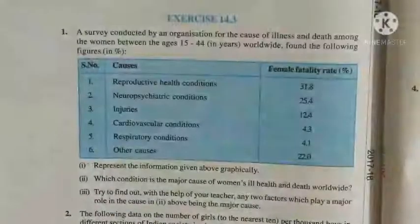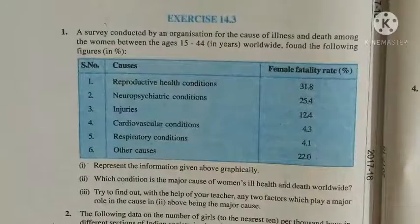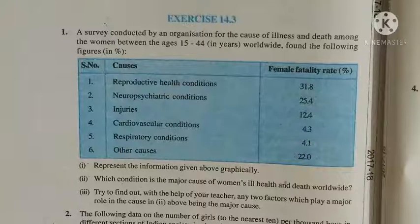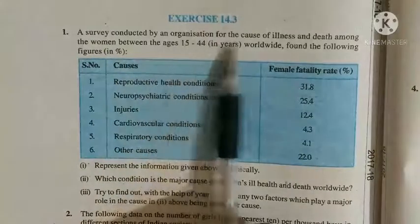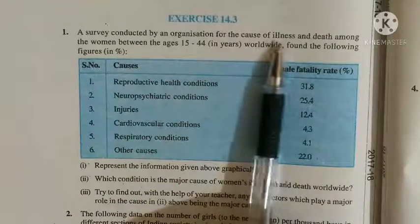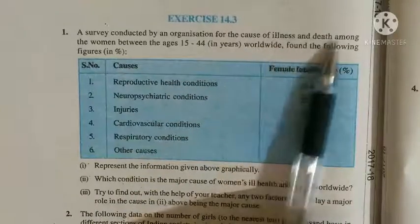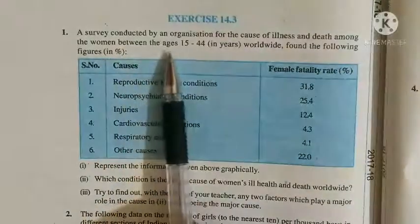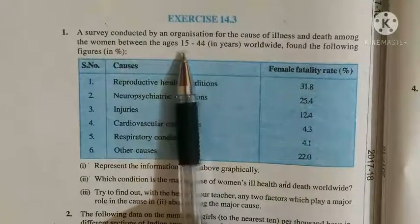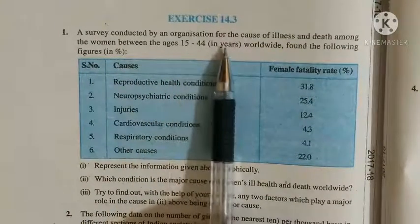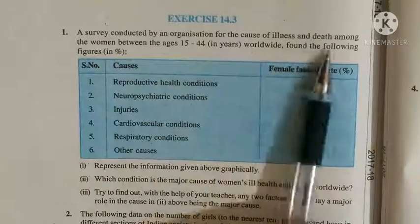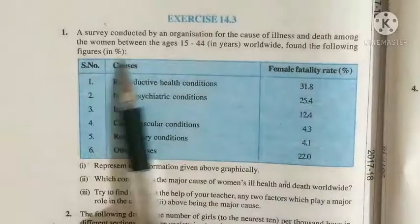Hello students, today we will try to solve exercise 14.3. See question number 1. A survey conducted by an organization for the cause of illness and death among the women between the ages 15 to 44 years worldwide found the following figures in percent.